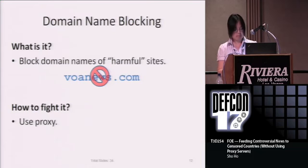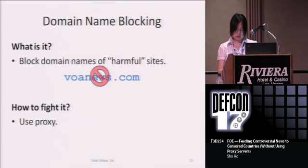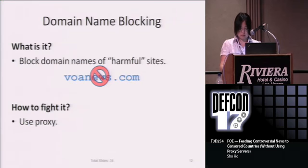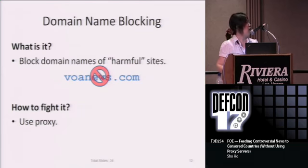Domain name blocking is a much more flexible way of blocking websites. It doesn't matter what IP addresses you change to — as long as you don't change your domain name, your site will be blocked. To fight domain name blocking, we can tell the users to use proxy servers. Then after a while, the censors realize there are just too many harmful domains and they can't keep track of all of them, so they implement another censorship technology.